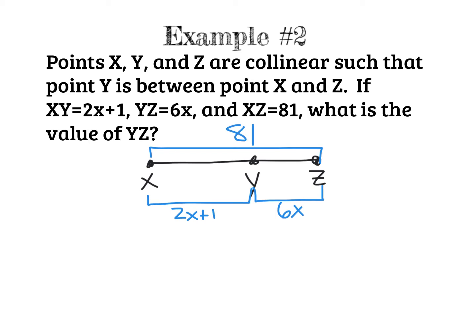This is the very first step. Look at your picture. The key words here are collinear. Y is between X and Z. And then I start plugging in my values for those segments. Once you have that, we go back to the betweenness of points theorem, where you can add the two smaller parts to get the total. And I'm going to do that. I'm going to add the two smaller parts. 2X plus 1 plus the other small part should give you the total, which is 81.